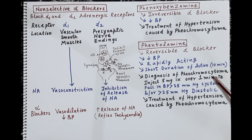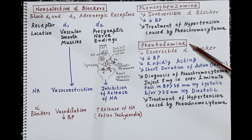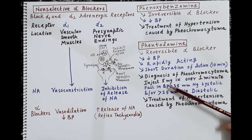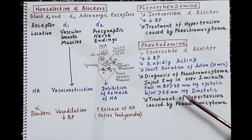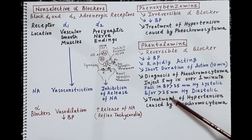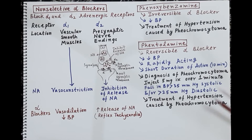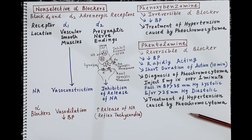Pheochromocytoma is a tumour of the adrenal gland with excessive release of adrenaline, causing a rise in blood pressure. Administration of phentolamine, an alpha blocker, should produce a fall in blood pressure if pheochromocytoma is present. When phentolamine is injected at 5 mg intravenous over 1 minute, systolic blood pressure falls by about 35 mmHg and diastolic by about 25 mmHg, confirming that hypertension is due to pheochromocytoma. Phentolamine is also used for treatment of hypertension caused by pheochromocytoma.